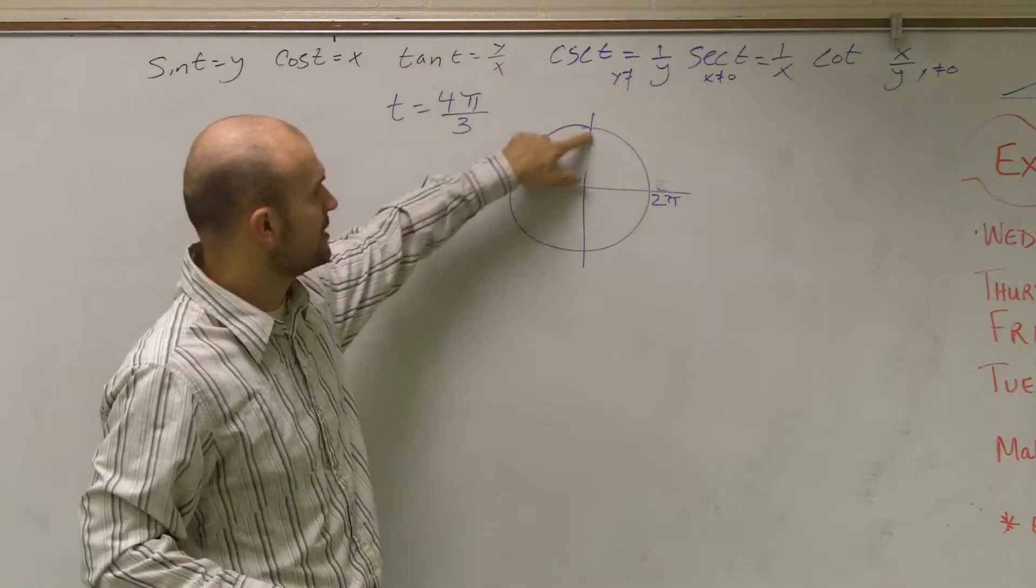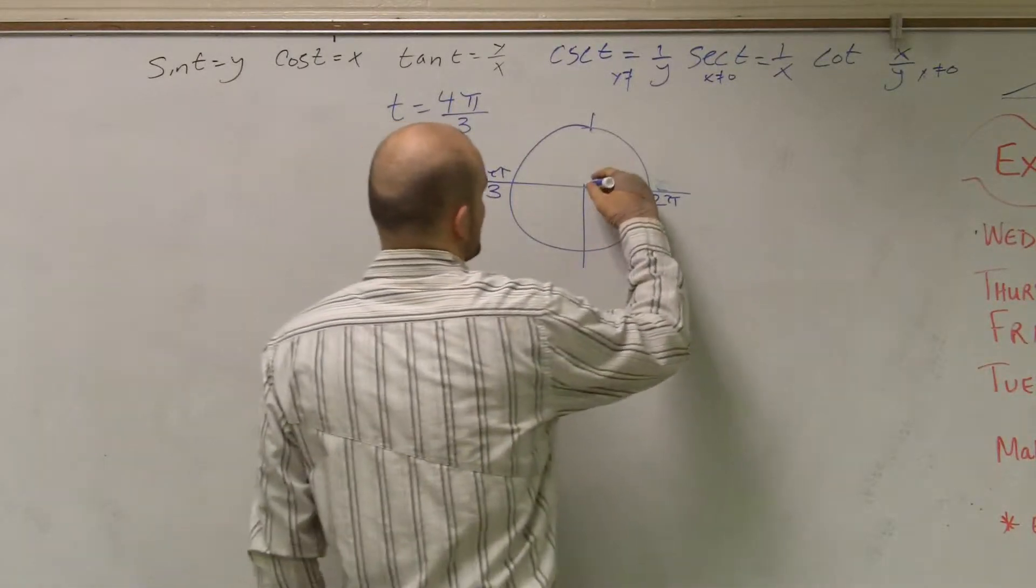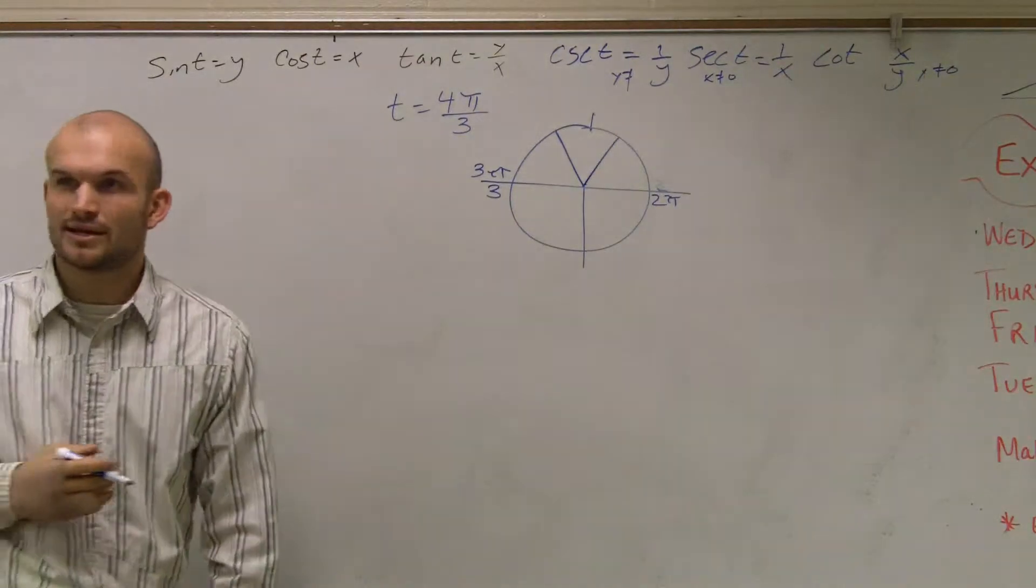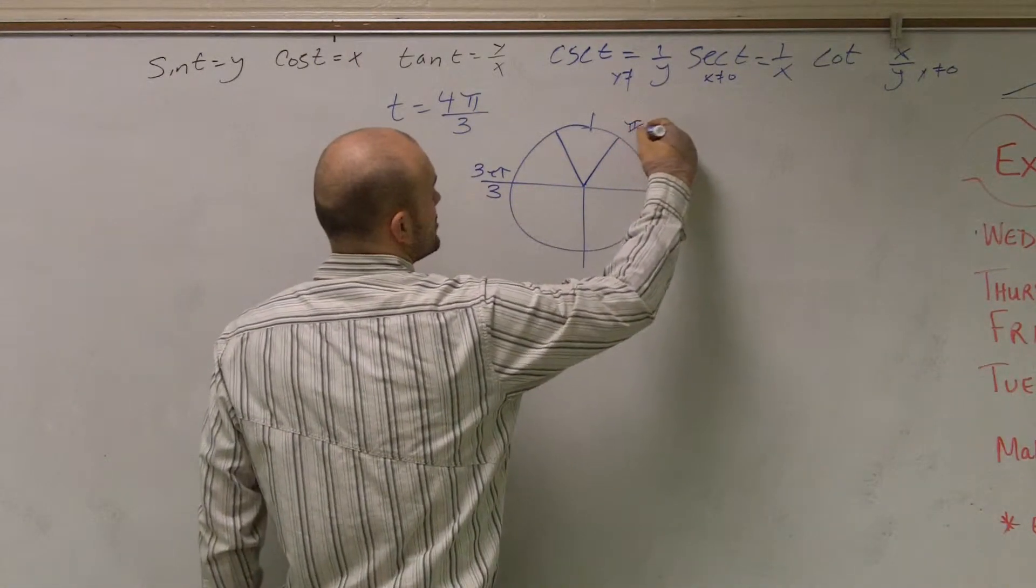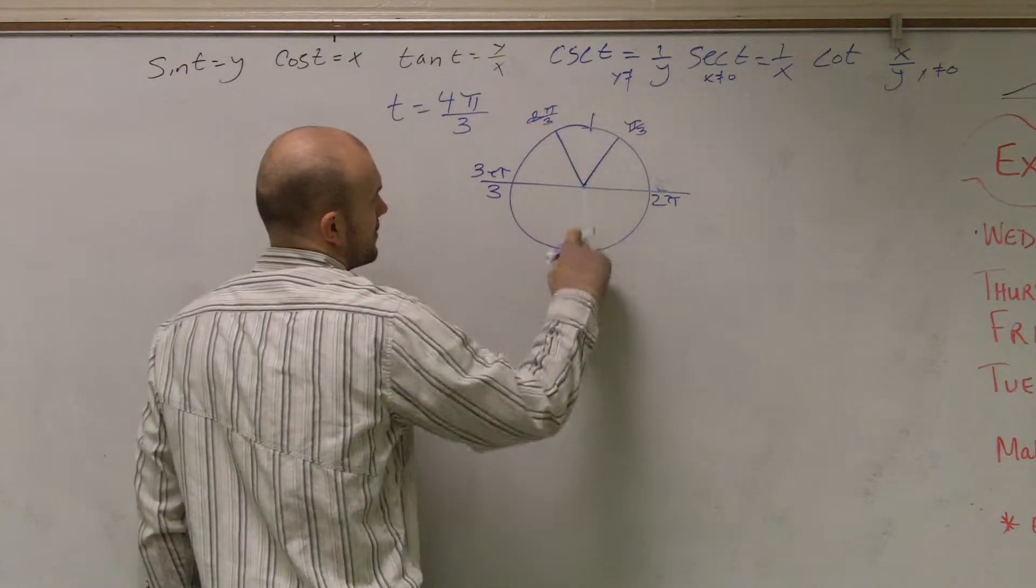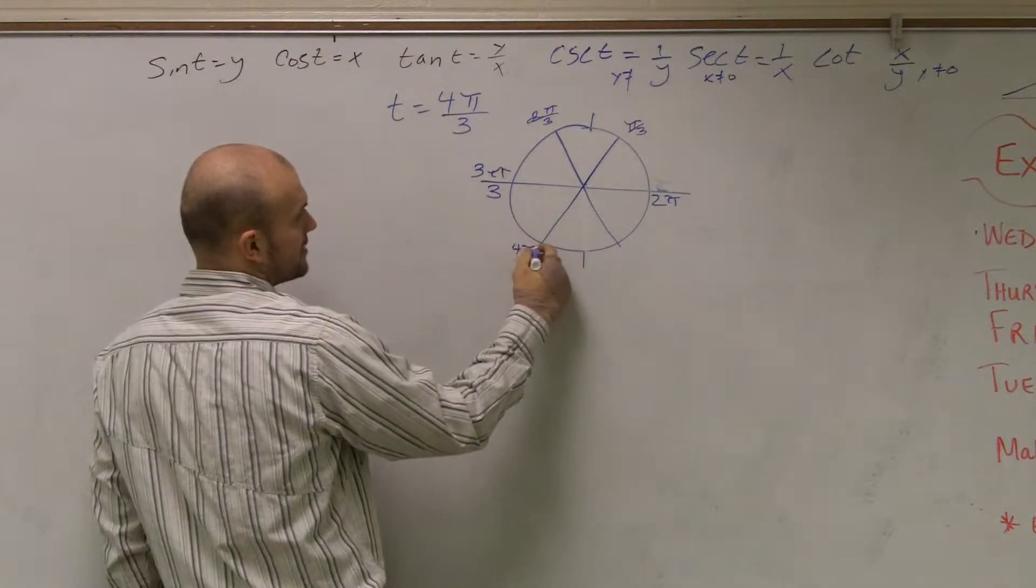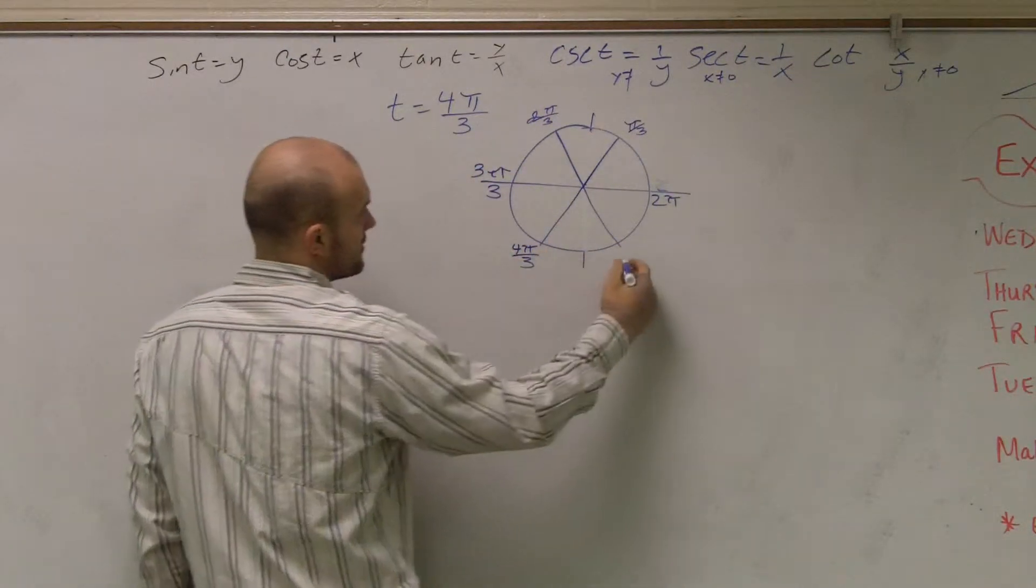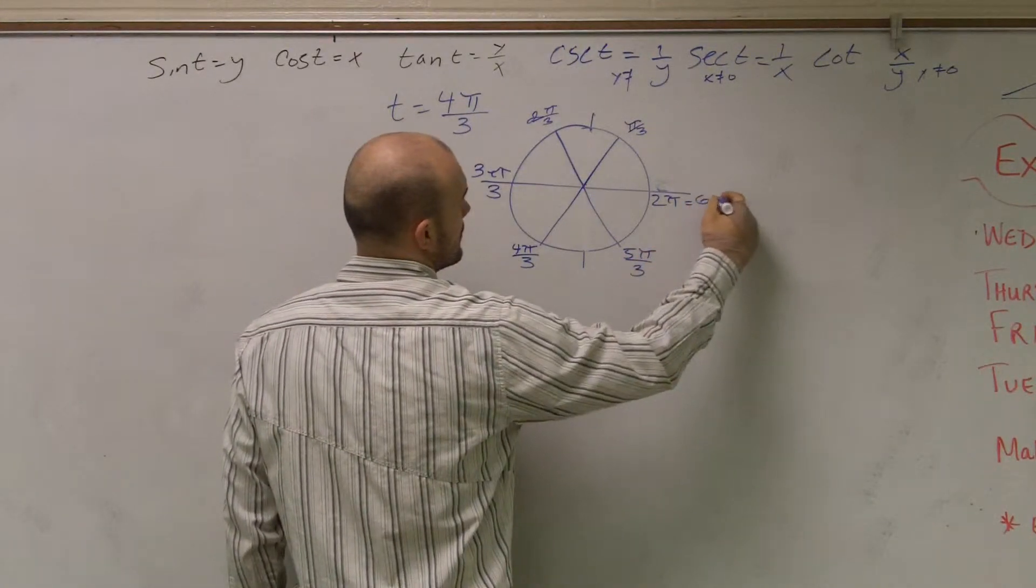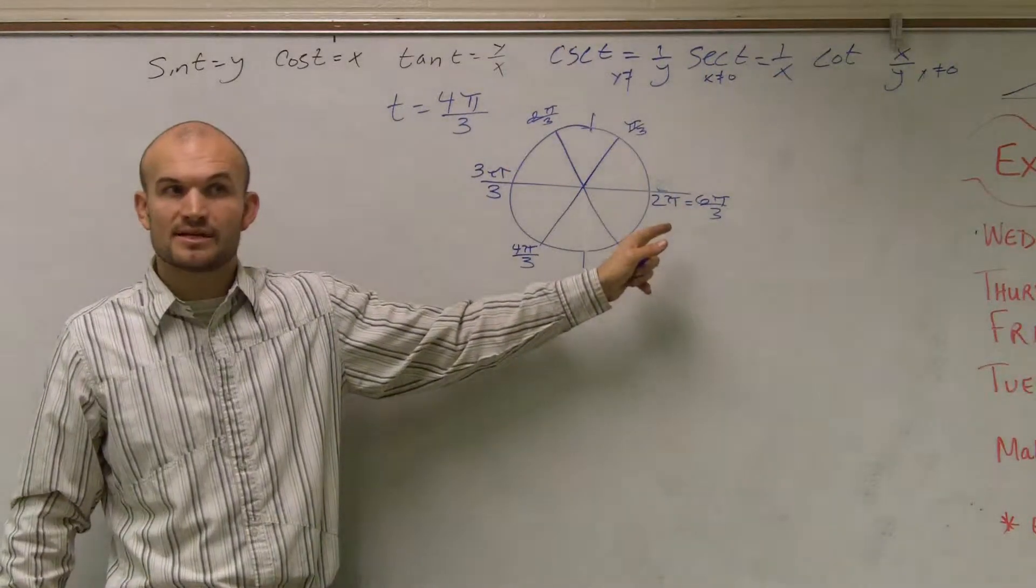When you're doing thirds, I like to eliminate this little line. It helps me break it up evenly into thirds. Just a little simple trick that I like to do. Because there, I know that this point is π over 3, this point is 2π over 3. So this is 3π over 3, this one is 4π over 3, and this one is 5π over 3, and that becomes 6π over 3. 6π over 3 is the same thing as 2π. Does that make sense?